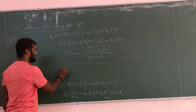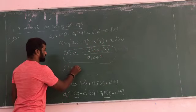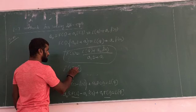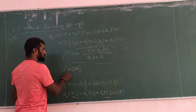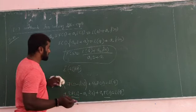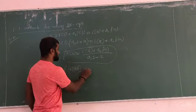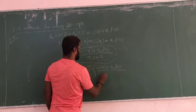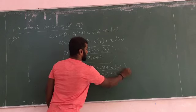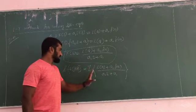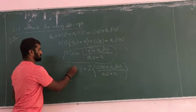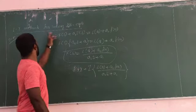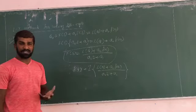Therefore, F(s) equals [L{Q} plus A0·f(0)] divided by [A0·s plus A1]. Then apply the inverse Laplace on both sides: since L inverse of L{f(t)} equals f(t), we get f(t) equals L inverse of [L{Q} plus A0·f(0)] divided by [A0·s plus A1]. This is the complete procedure for solving the differential equation.